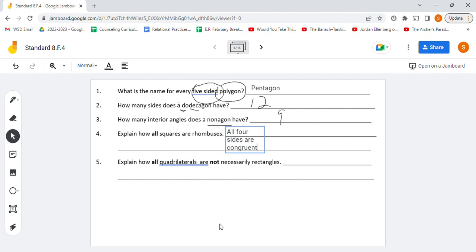And then on this last one, explain how all quadrilaterals are not necessarily rectangles. Well, quadrilaterals have four sides, so do rectangles, but quadrilaterals could be any shape with four sides. So we get a shape like this, for example, which is not a rectangle, because we have these two sides here and here, opposite sides that are not congruent to each other. Also, the angles are not 90-degree angles.